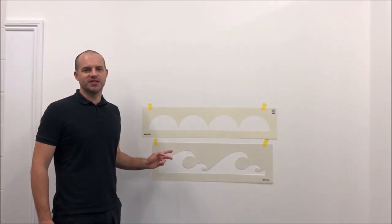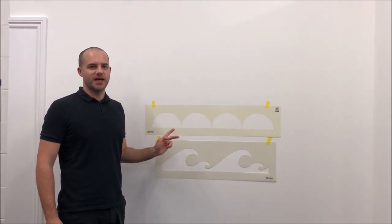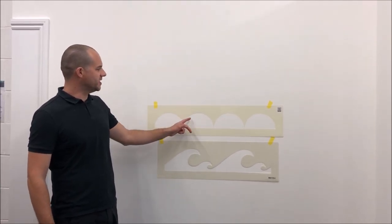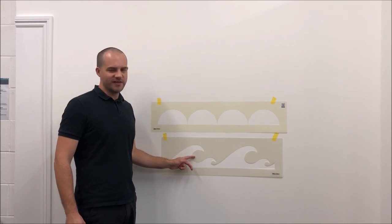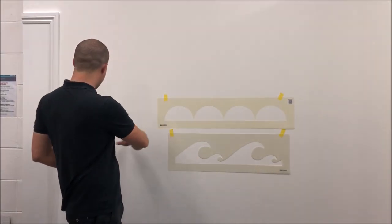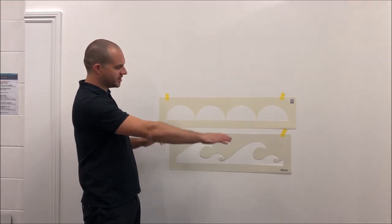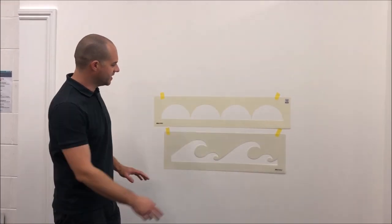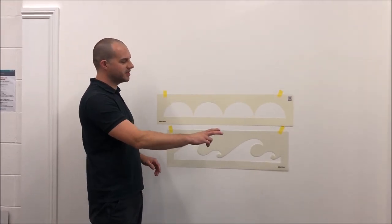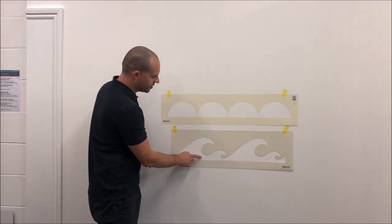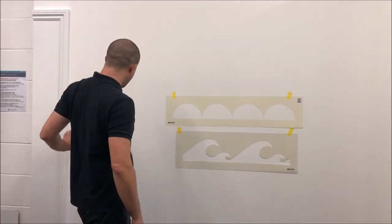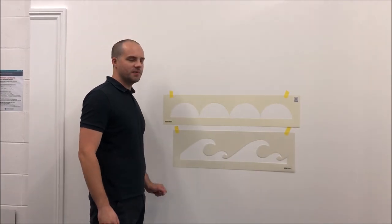We have a few different border stencil designs. This is a scallop border we're using today, and this is an example of a wave border. They both work the same way. You paint a band across your wall horizontally, a color band at the bottom, and then use the stencils as a topper to paint through the cut-out areas to create the border design along the top.